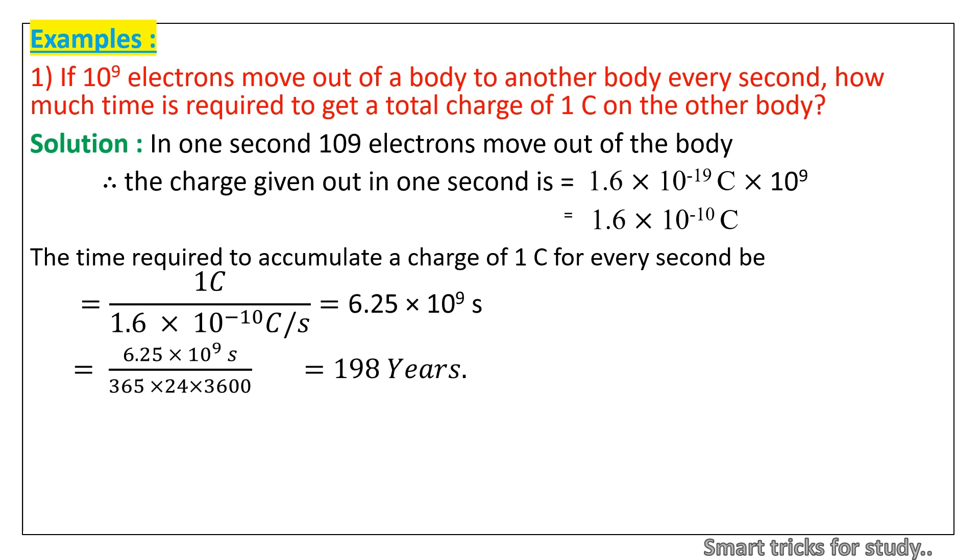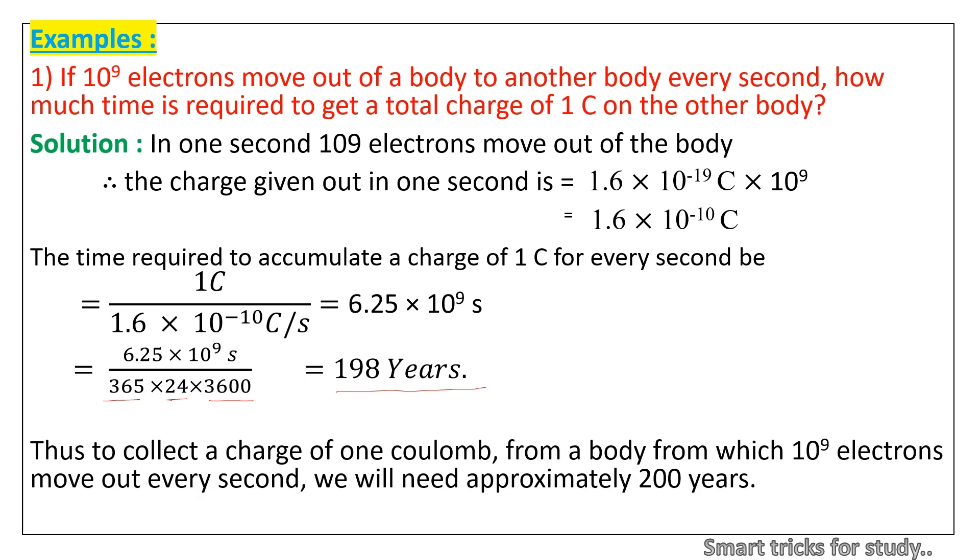To convert from seconds to years, divide 6.25 × 10⁹ seconds by 365 × 24 × 3600. Finally, we get 198 years. Thus to collect a charge of 1 coulomb from a body from which 10⁹ electrons move out every second, we will need approximately 200 years.